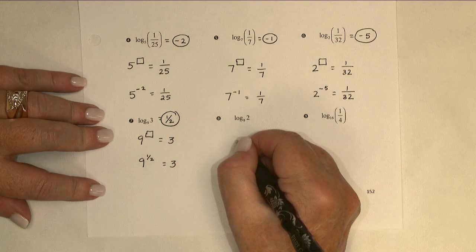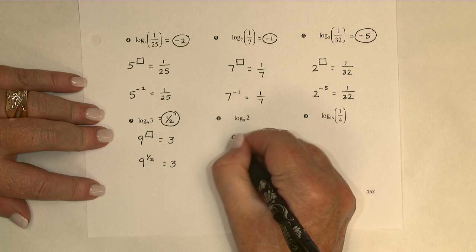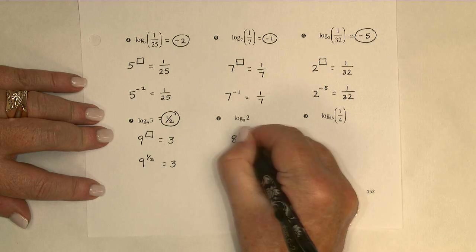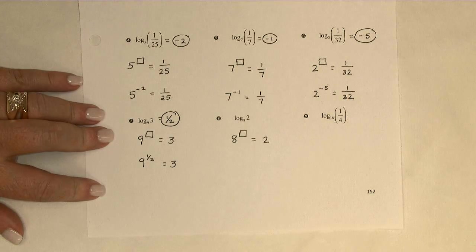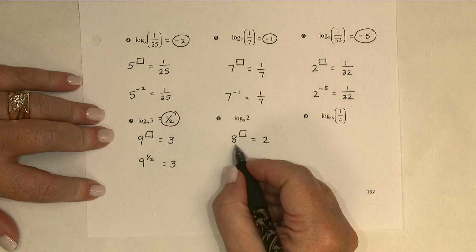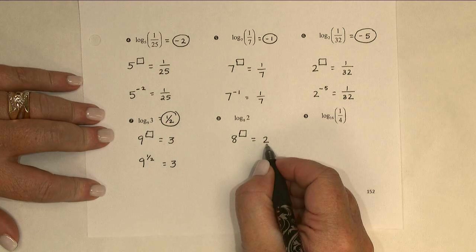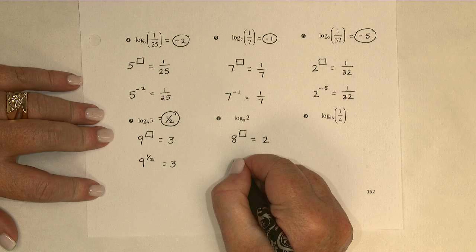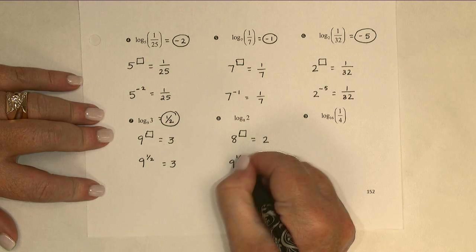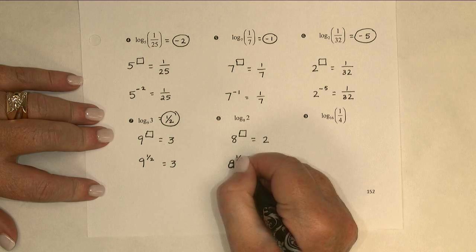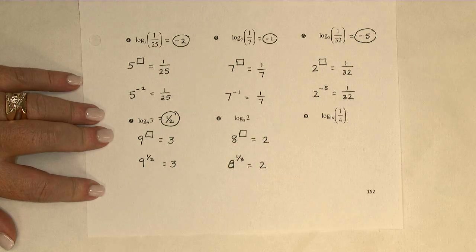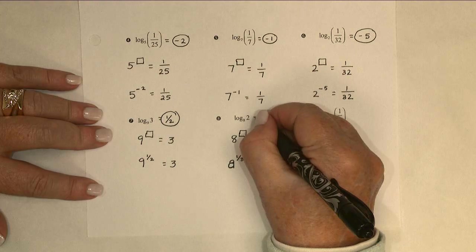Logarithm base 8 of 2 asks with a base of 8 what power do I need to get 2? Again, I'm thinking this is actually a cubed root. But a cubed root is the same as a 1 third power. That was 8 to the 1 third power. So, the value of my logarithm is 1 third.